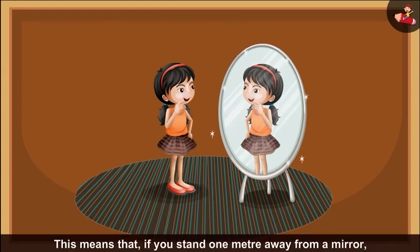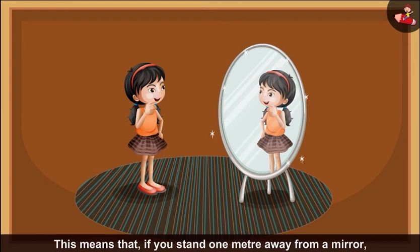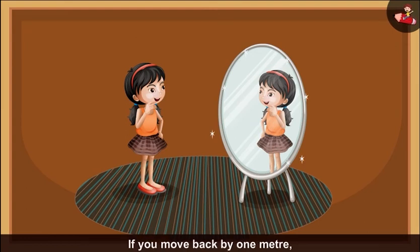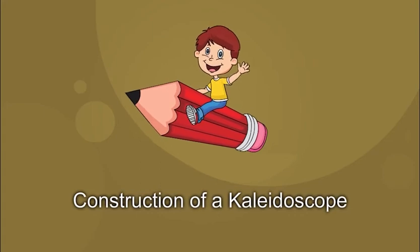This means that if you stand 1 meter away from a mirror, the image is 1 meter behind the mirror. If you move back by 1 meter, the image also moves back by 1 meter. Construction of a kaleidoscope. Materials required: